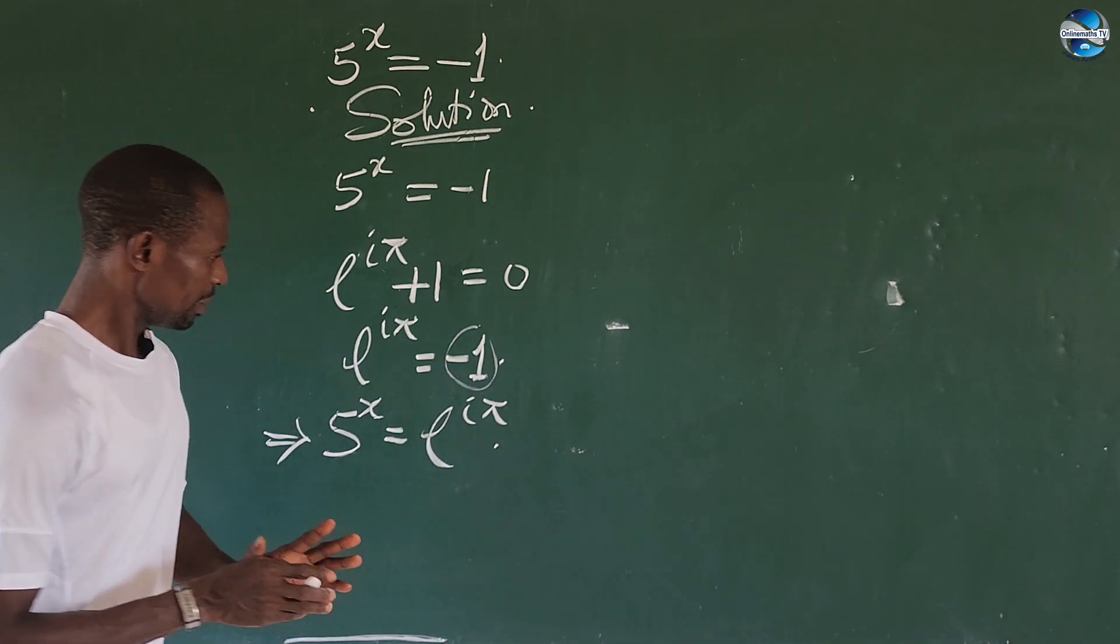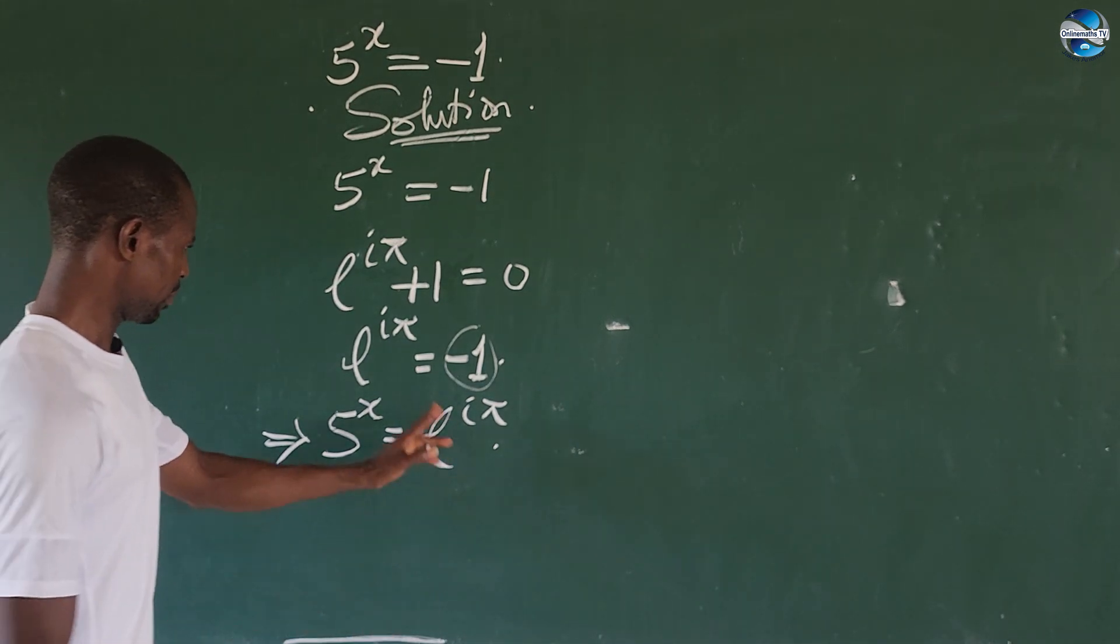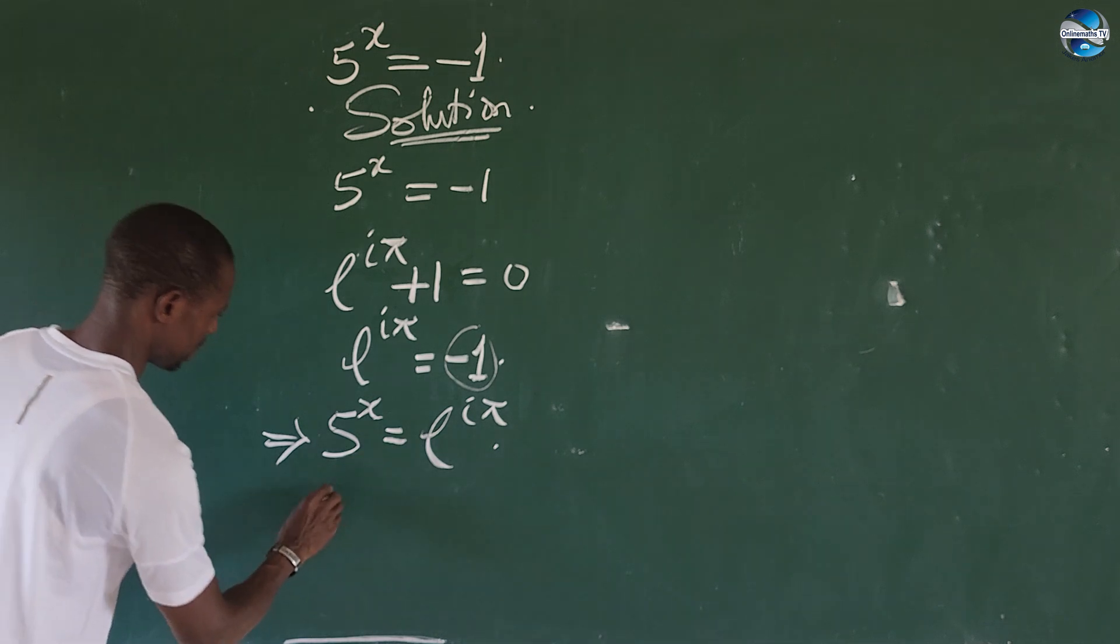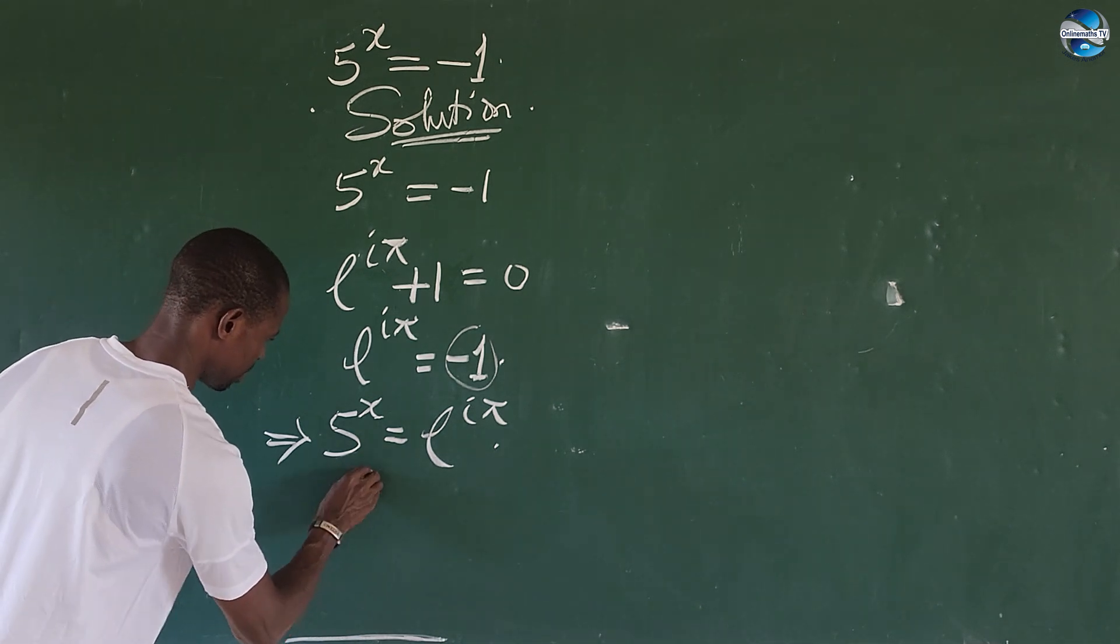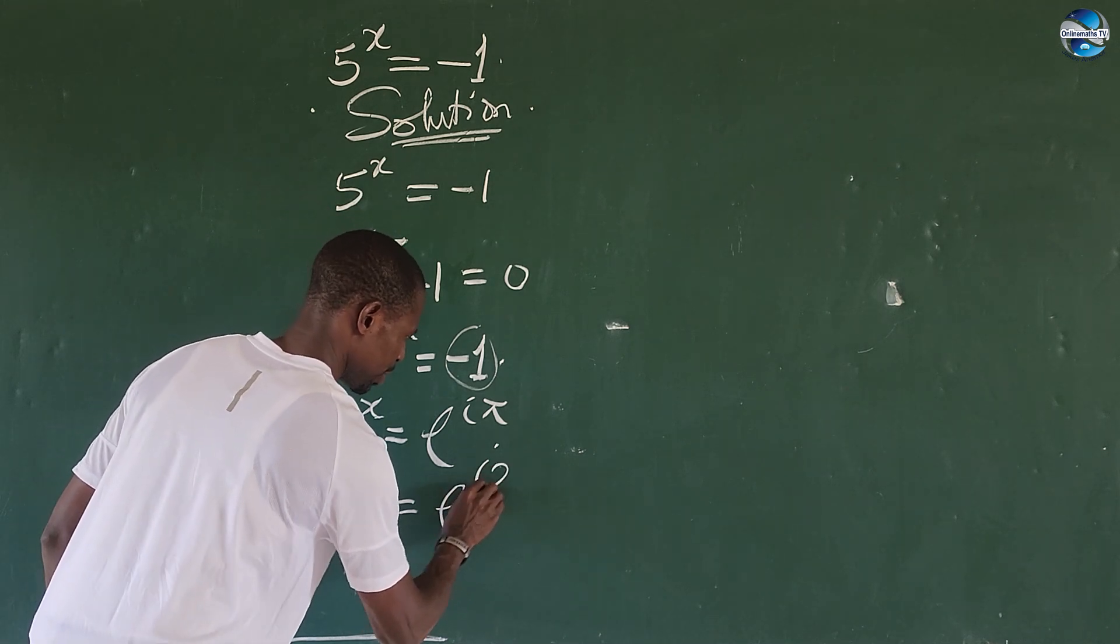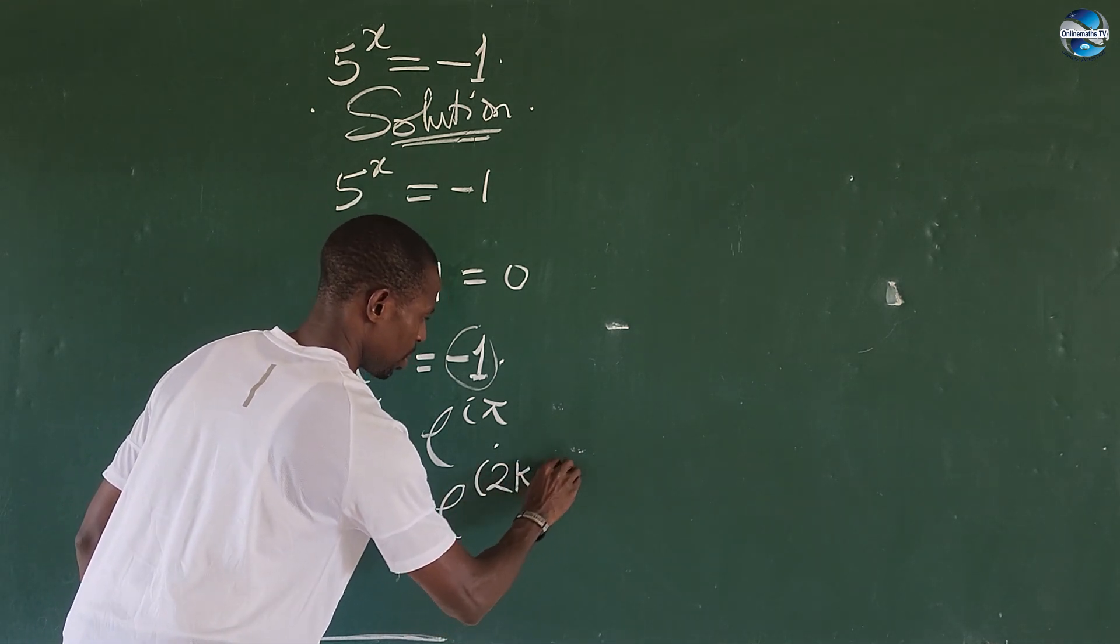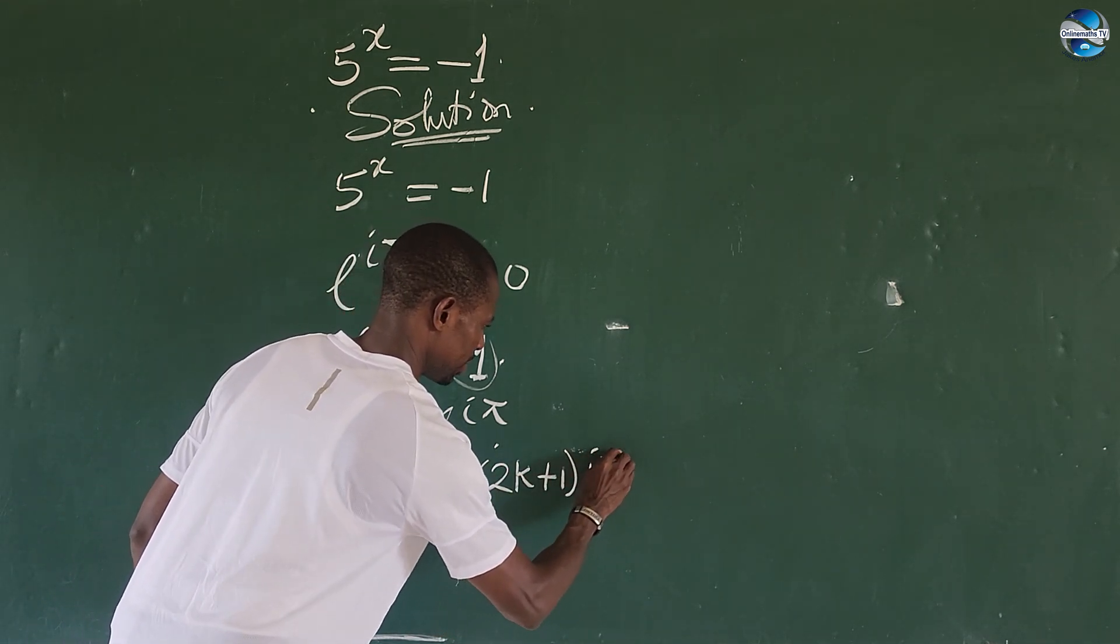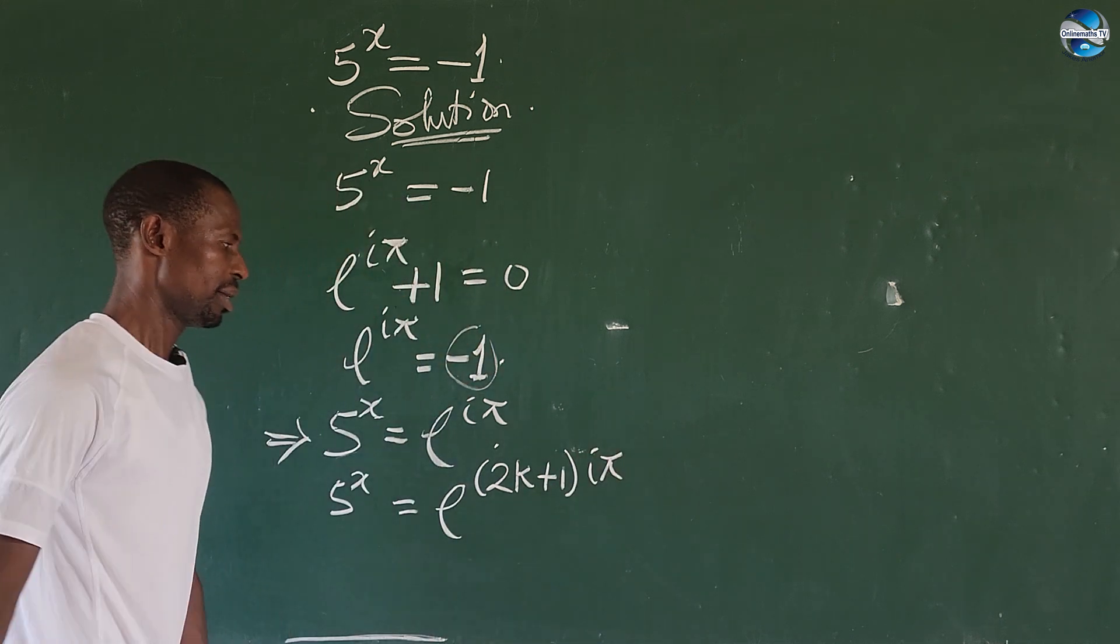Therefore, any integer k for this special, we're going to have this to be 5 to the power of x, this is equal to e to the power of bracket 2k plus 1 bracket times i pi.